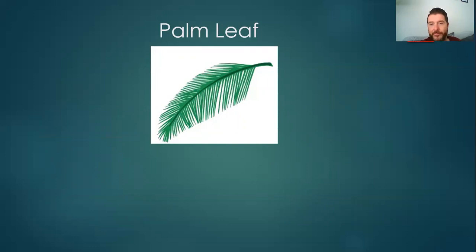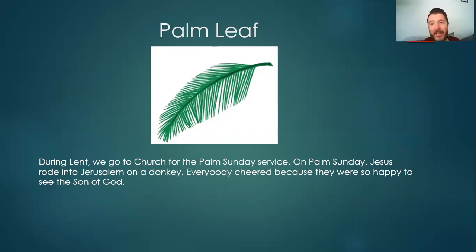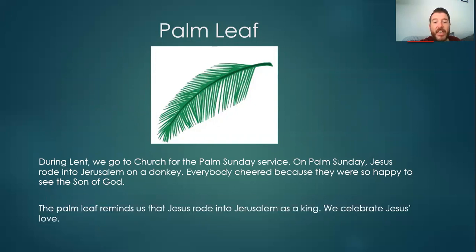Next we've got the palm leaf. During Lent, we go to church for the Palm Sunday service. On Palm Sunday, Jesus rode into Jerusalem on a donkey. Everybody cheered because they were so happy to see the Son of God. At the start of the Easter story, Jesus rides in on a donkey and everyone greets him like he's a king — everyone's so happy to see him. We know sadly that it doesn't end up like that, but it starts very positively. The palm leaf reminds us that Jesus rode into Jerusalem as a king and we celebrate Jesus's love. The palm leaf reminds us that Jesus is a king and that he loves all of us.